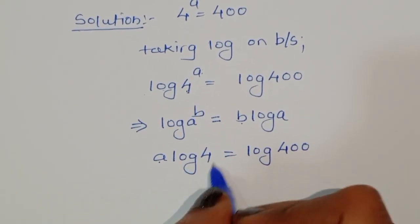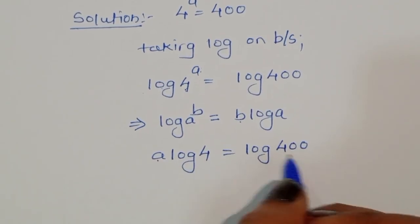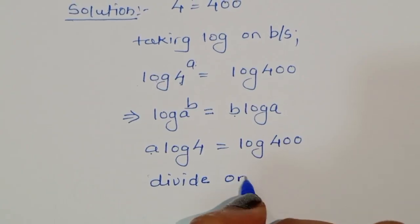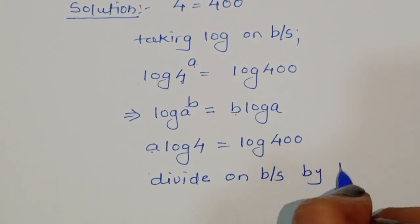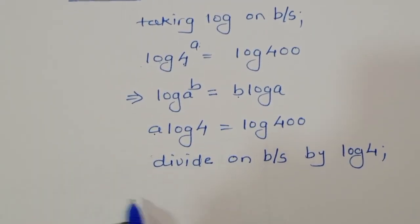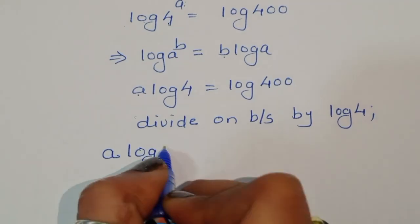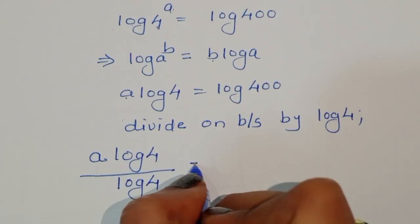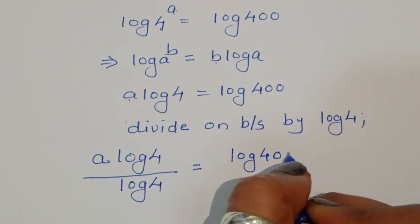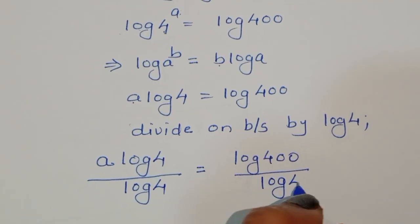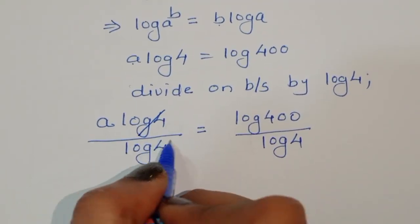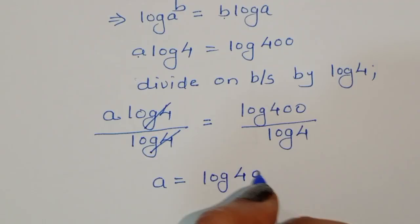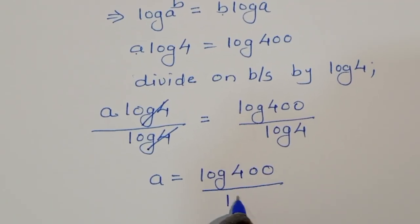Now we have to find out the value of a, so we need to cancel the term log of 4. We divide both sides by log of 4. So a log of 4 divided by log of 4 is equal to log of 400 divided by log of 4. Log of 4 cancels, giving a is equal to log of 400 divided by log of 4.